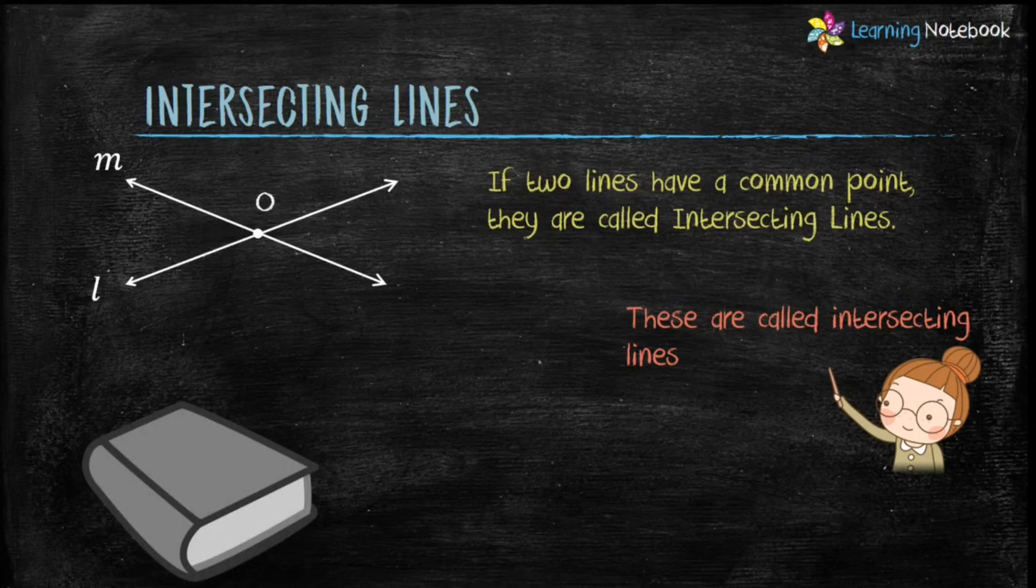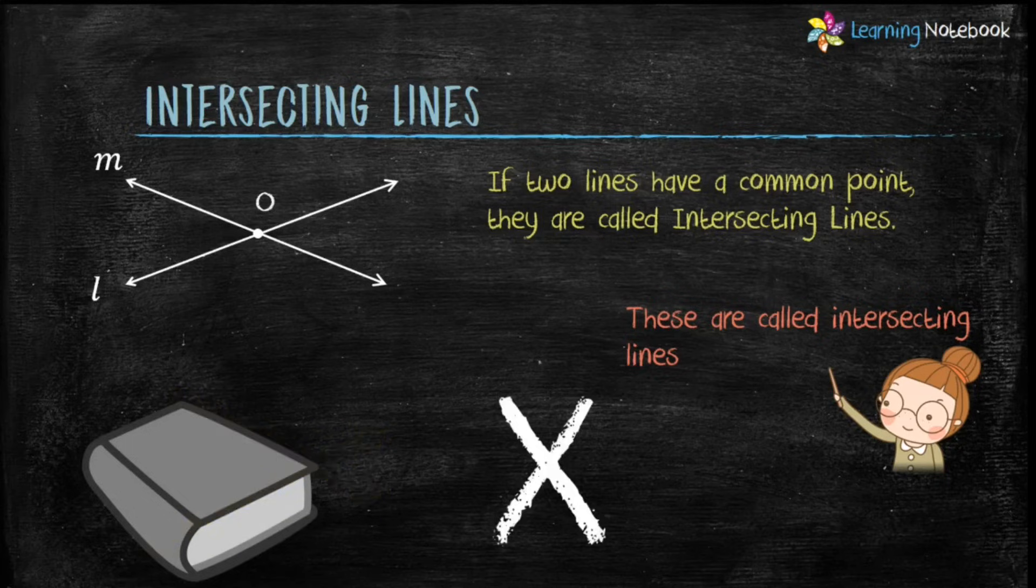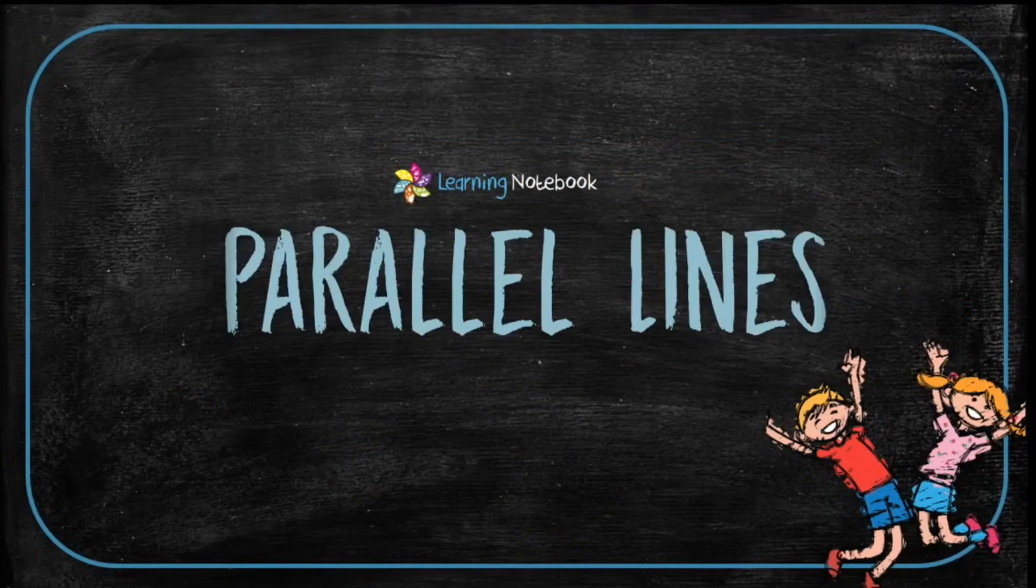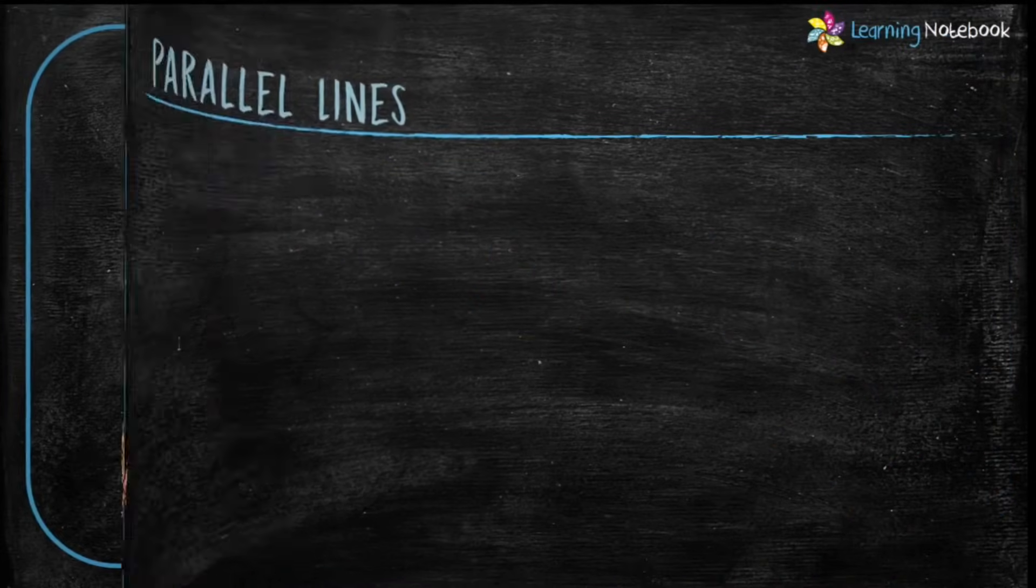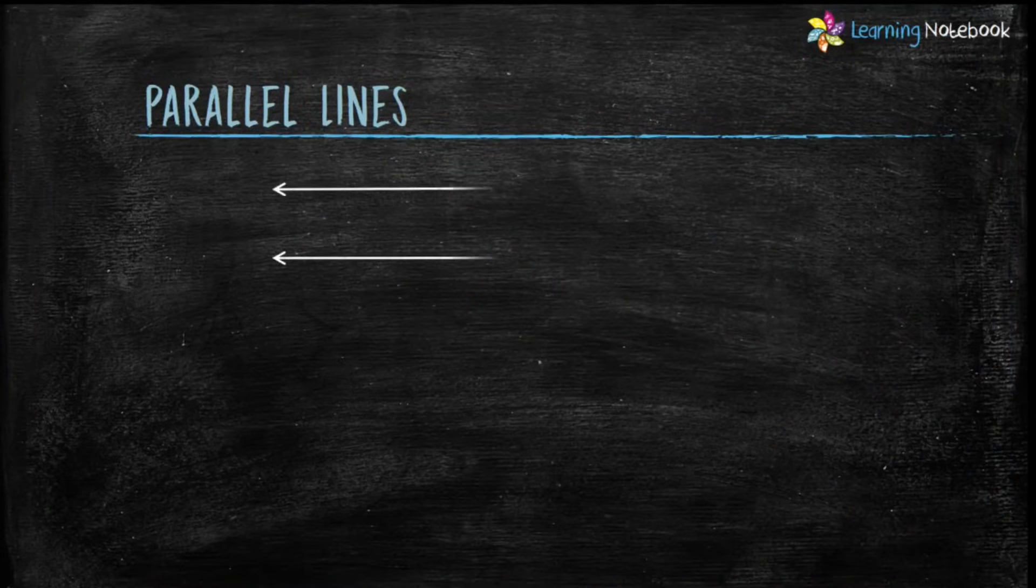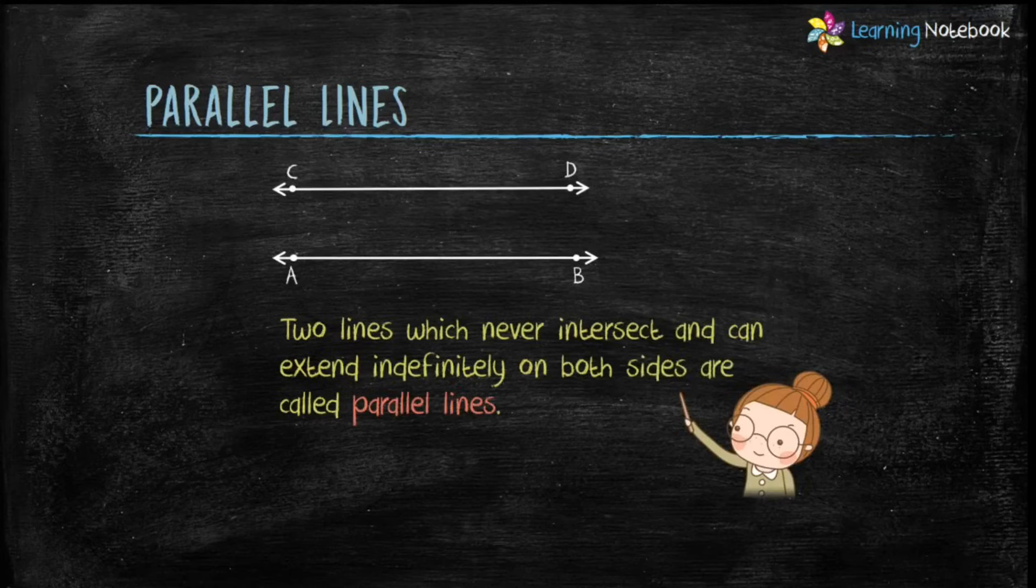Example of intersecting lines is edges of a book or capital letter X. Next is parallel lines. Two lines which never intersect and can extend indefinitely on both sides are called parallel lines.